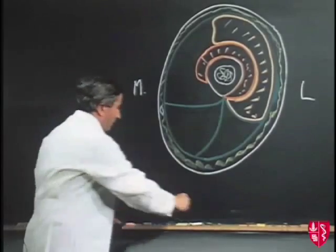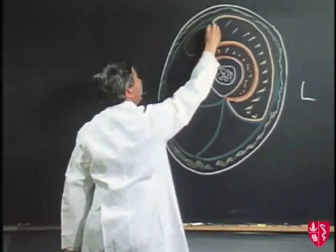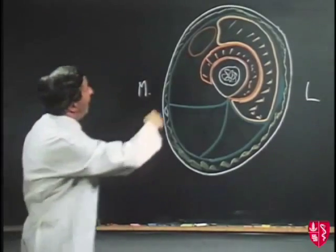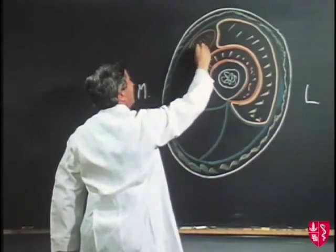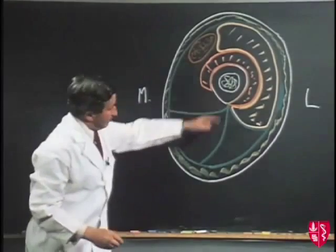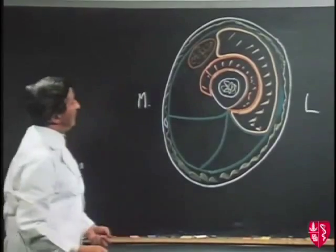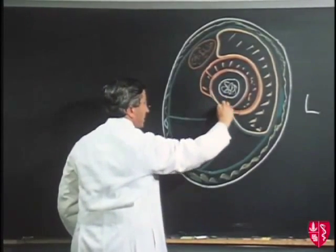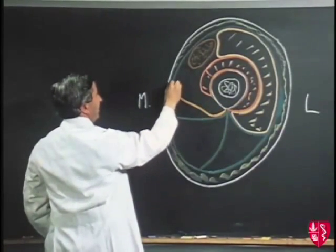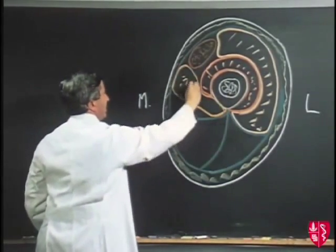Medially and in front we have the rectus femoris, which arose from the anterior inferior iliac spine and from above the acetabulum and is passing down to be inserted into the patella. On the medial side of the shaft of the femur we have the vastus medialis, arising from the medial lip of the linea aspera, coming up round here and passing down — the vastus medialis cut across.